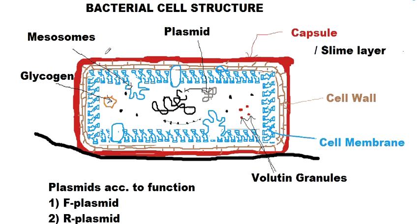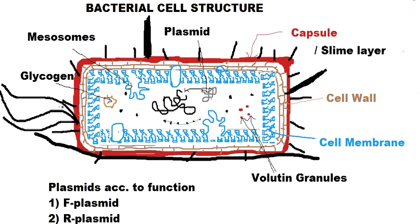Now we are going to talk about the flagella, pili, and fimbriae that a bacterium possesses. The large structures visible here are the flagella. Flagella help in the motility of the bacteria in water. They are composed of flagellin protein and have a nine-plus-zero arrangement inside them, which we will study in more detail in later videos.